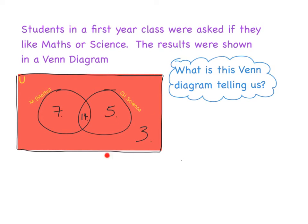We have a lot of information here, but what is it actually saying? We're going to read the Venn diagram. Just as you would read a book or read a question, you're going to look at this information and read from it. The first part I would always look towards is the intersection here. Within the intersection, M ∩ S is equal to 14, so I can write that down.